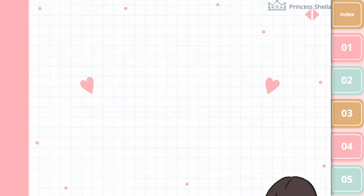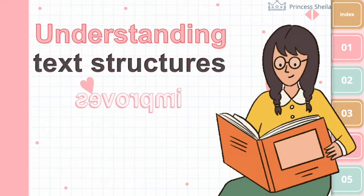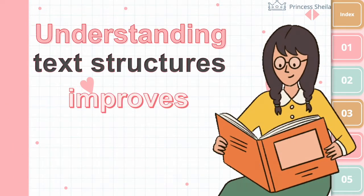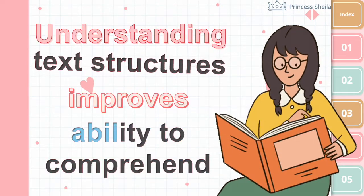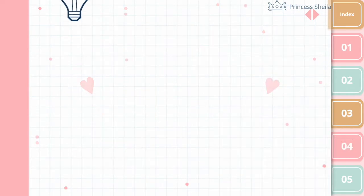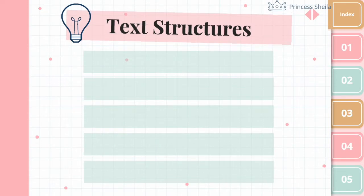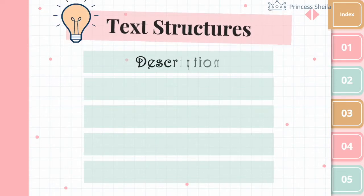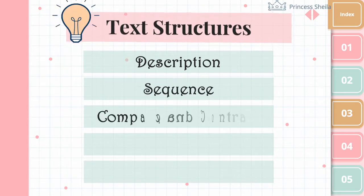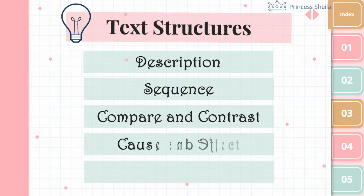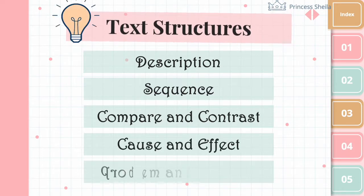Understanding text structures will improve your ability to comprehend what you are reading. There are five structures of informational text: namely, description, sequence, compare and contrast, cause and effect, and problem and solution.